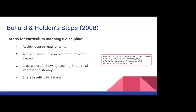Several studies looked at the ACRL information literacy competency standards. These later studies asked where library instruction occurs within the curriculum and urged libraries to develop library-specific learning outcomes of their own. Bullard and Holden in 2008 outlined four steps for curriculum mapping a discipline: review degree requirements; analyze individual courses and identify existing information literacy concepts and areas of weakness; draft a curriculum map showing areas of existing and potential information literacy; and request meetings with faculty you already have relationships with, share results, then market to the rest of the department.